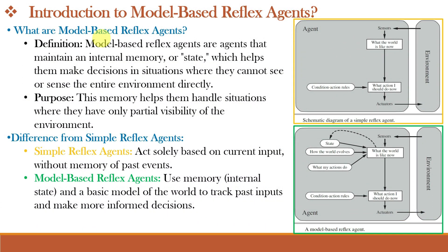What exactly is a Model Based Reflex Agent? Unlike simple reflex agents, Model Based Agents don't just rely on the current input. They also use a Model of the World to interpret that input. This Model Based Approach lets them handle situations with partial observability — meaning they cannot always see the whole picture and still work well. For example, in a self-driving car, the agent might not be able to see all the vehicles around it at once. The model helps it predict where other cars might be or how they might move, allowing it to make more informed decisions.